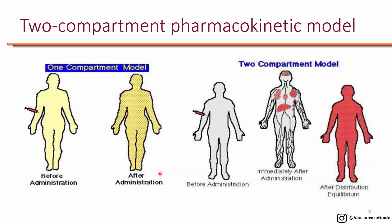It's important to understand the two-compartment pharmacokinetic model for vancomycin. In a one-compartment model, you administer the antibiotic and it stays in the central compartment. Because aminoglycosides are hydrophilic, their pharmacokinetics are very close to a one-compartment model, so for simplicity you can assume aminoglycosides show a one-compartment model.